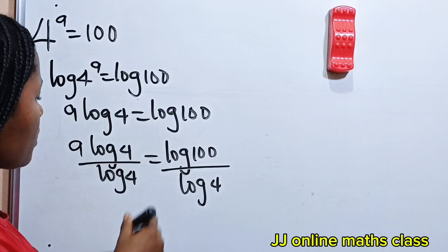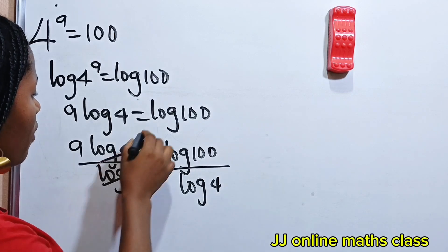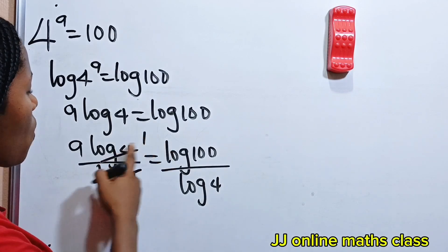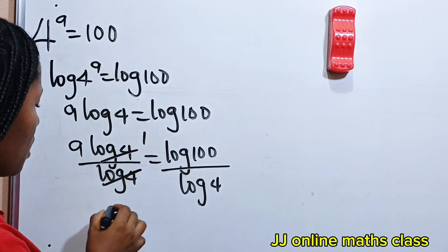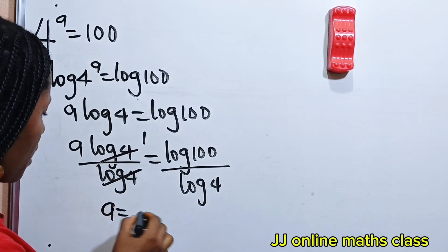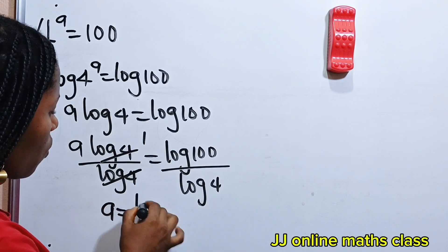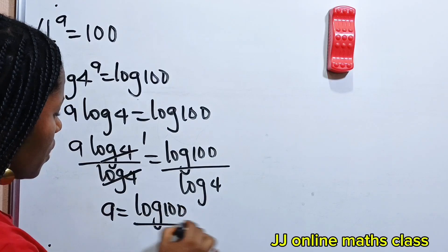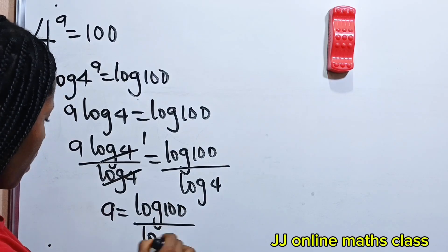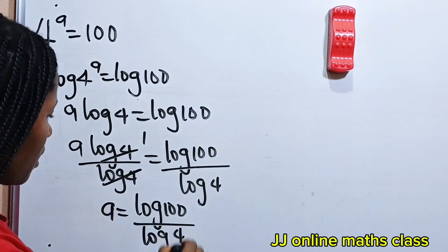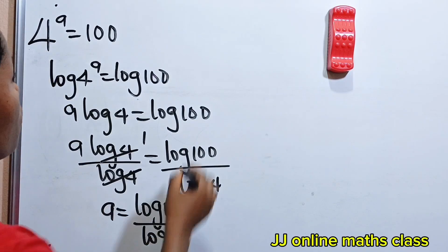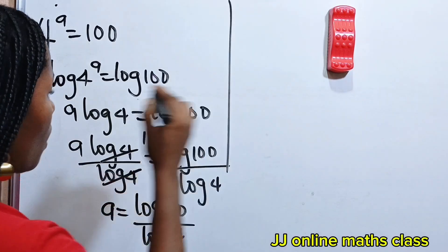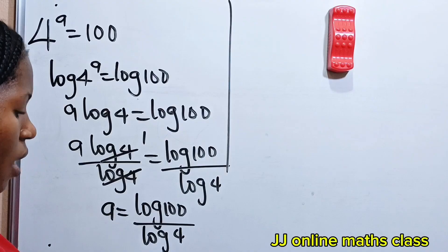When log 4 divides itself, we have 1. So 1 times A gives us A, which is equal to log 100 divided by log 4.